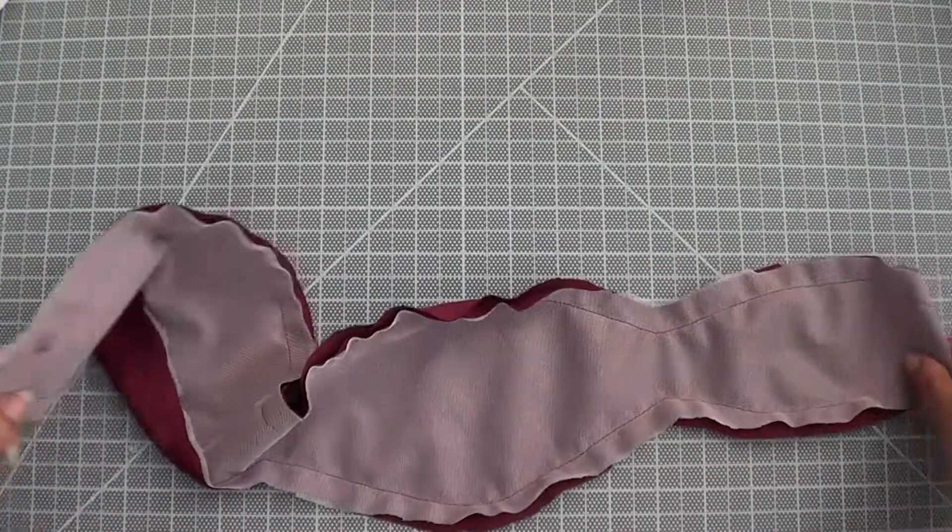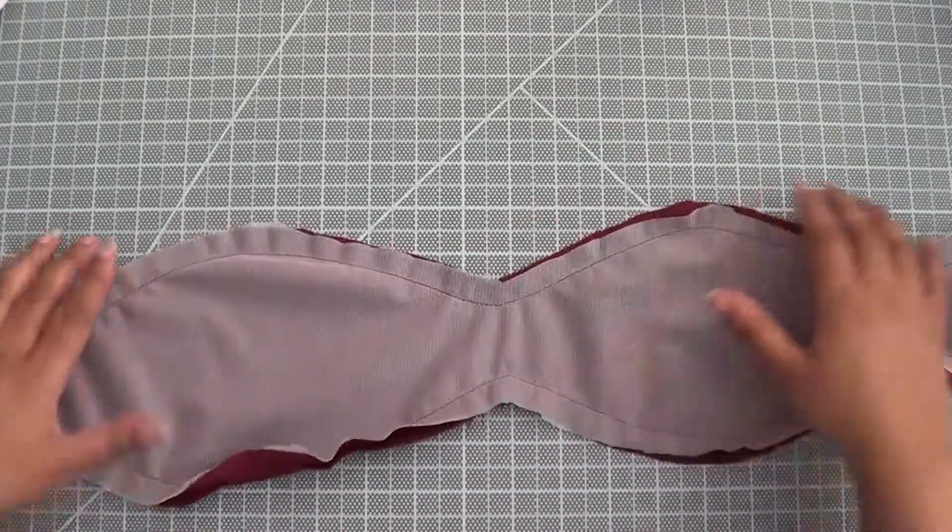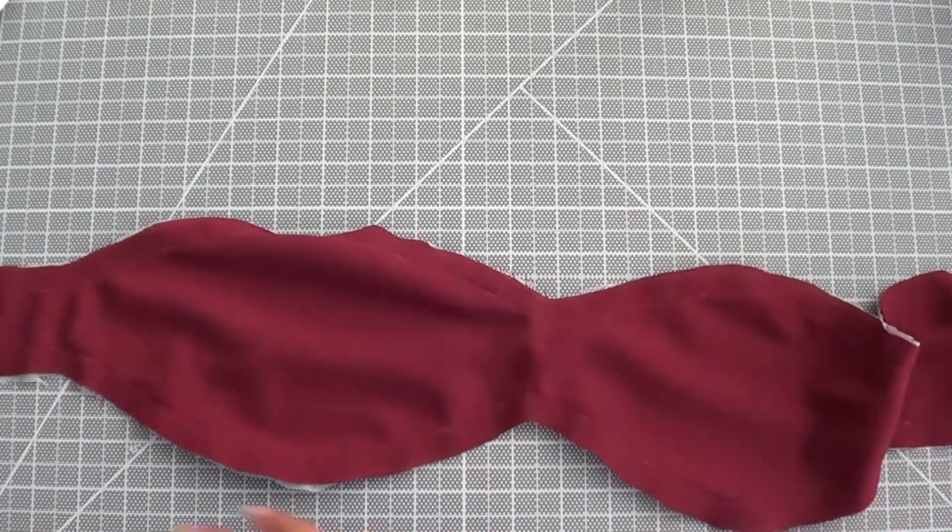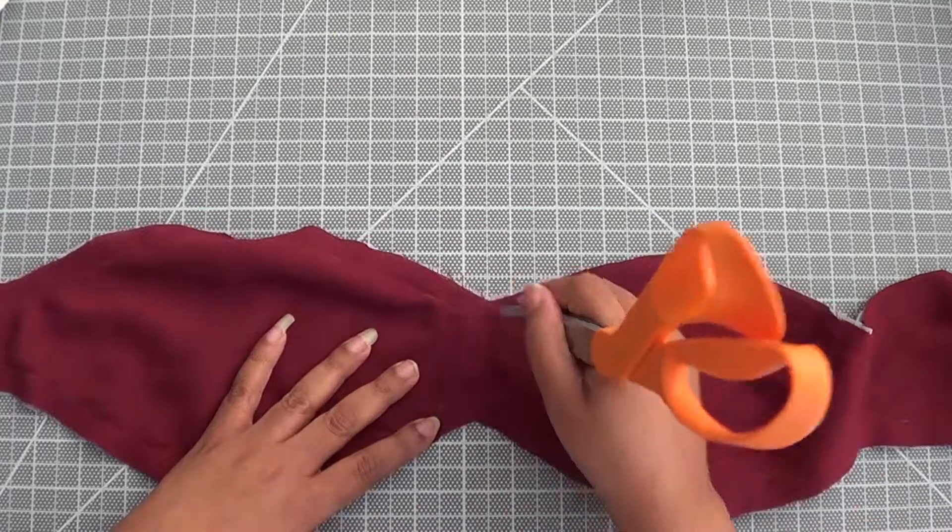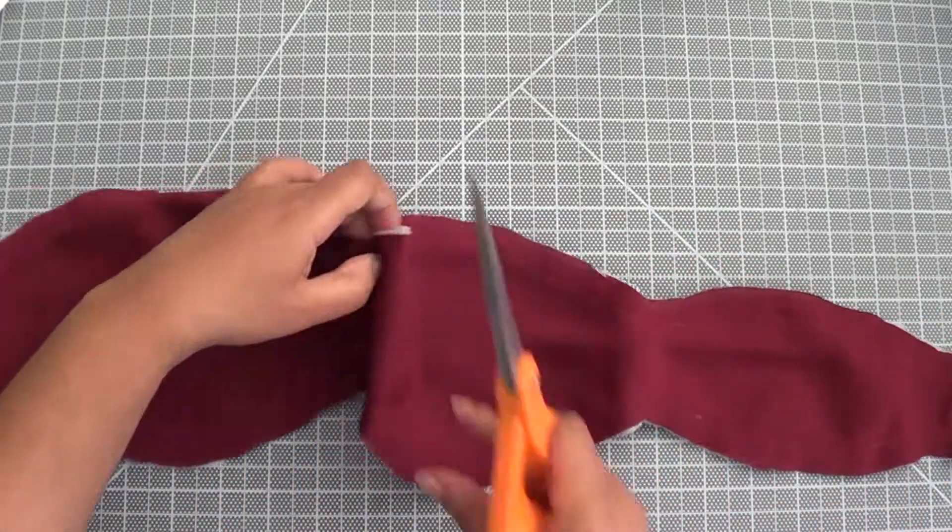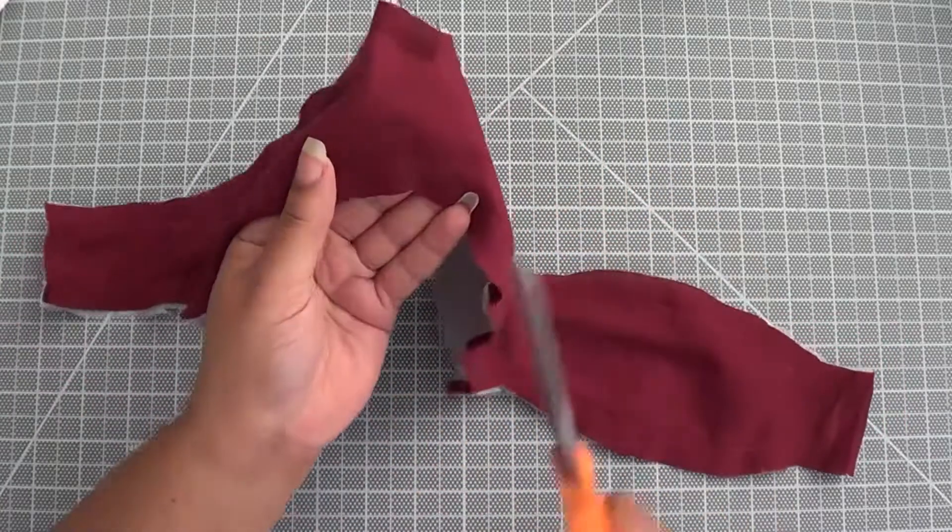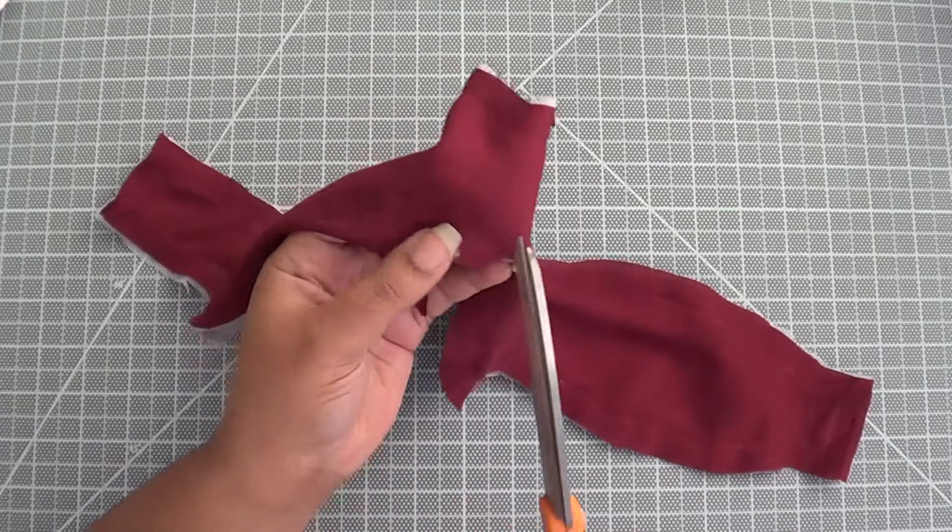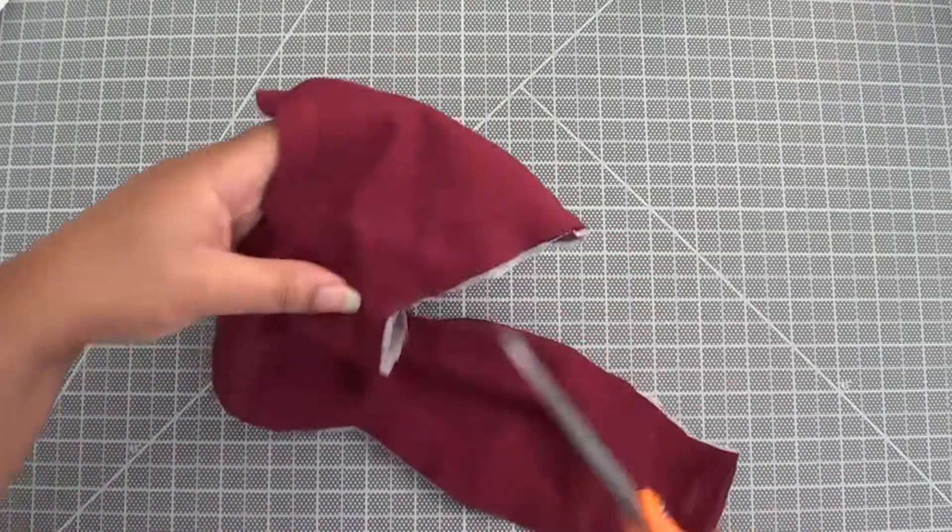Okay, so we have sewn these up and now what we're going to do is basically clip this here where it curves so that we don't have any issues when we try to fold this inside out. So clip, clip. Don't clip past the stitching or you will have messed up your thing.